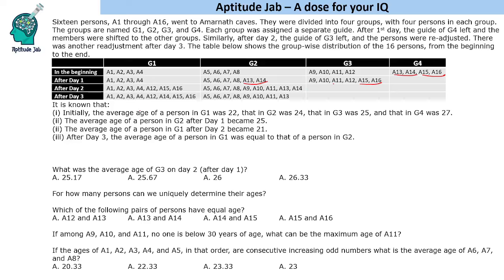Initially, the average age of a person in G1 was 22, G2 was 24, G3 was 25, and G4 was 27. Since each group has 4 members, we multiply by 4 to get totals: G1 = 88, G2 = 96, G3 = 100, G4 = 108. These are the total ages on the first day. The grand total of all 16 persons is 392.